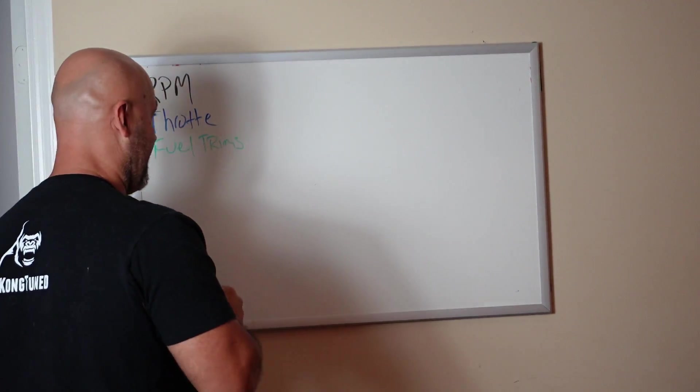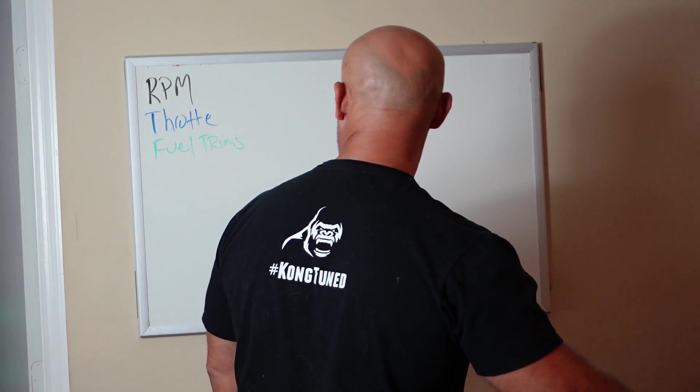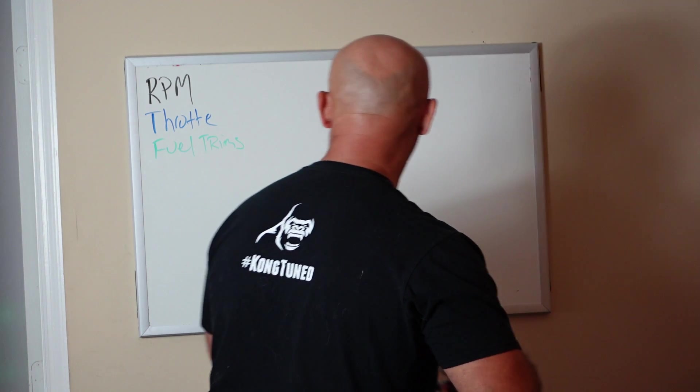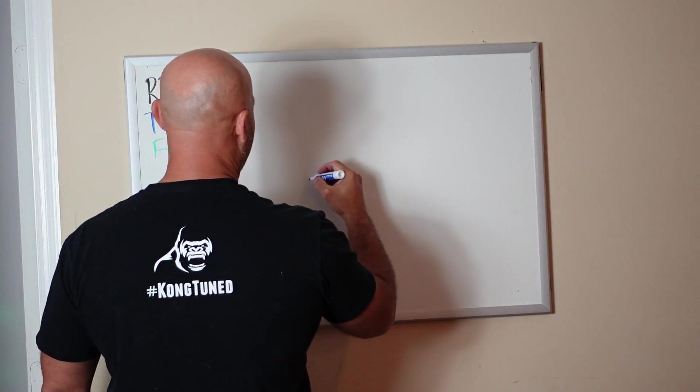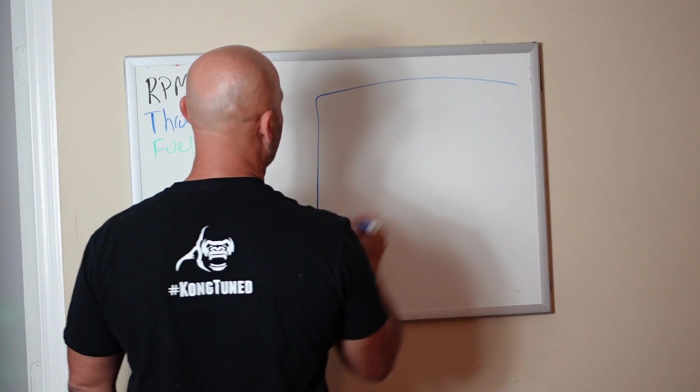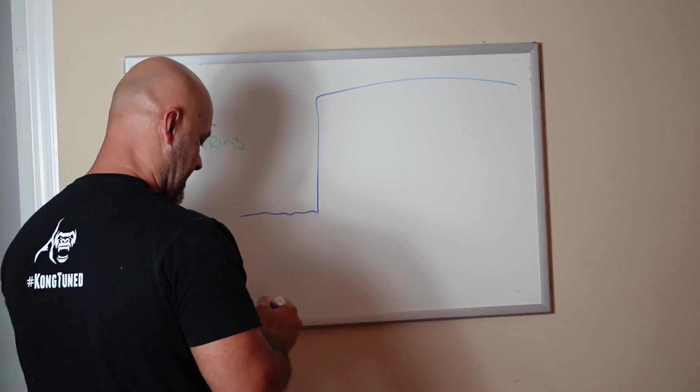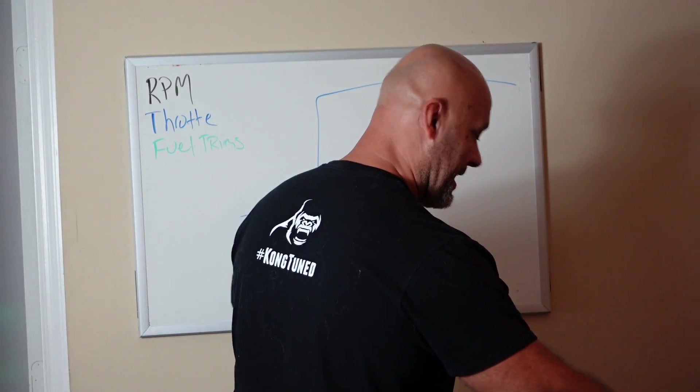So, throttle being blue—remember last time, let's do a WOT log. We're going to get right after this. This is your throttle, trails off. Let's say you go WOT there, and then RPM.